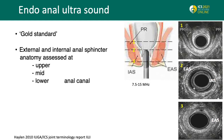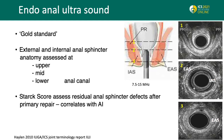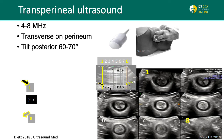External and internal anal sphincter anatomy is assessed at the upper, mid, and lower anal canal. Residual anal sphincter defects can be recorded by determining the Stark score, which is a series of measurements that determine the extent of a defect in the external and internal anal sphincters, as well as the anal mucosa.